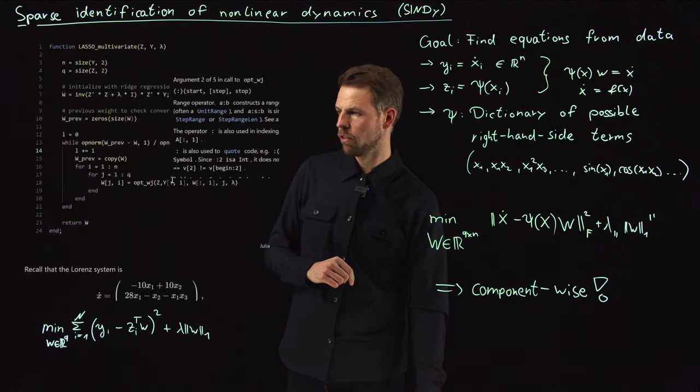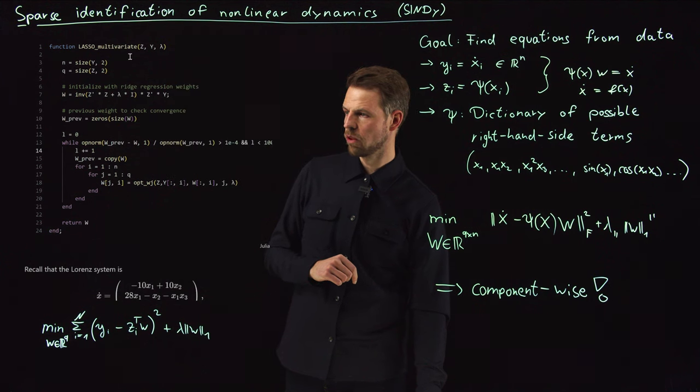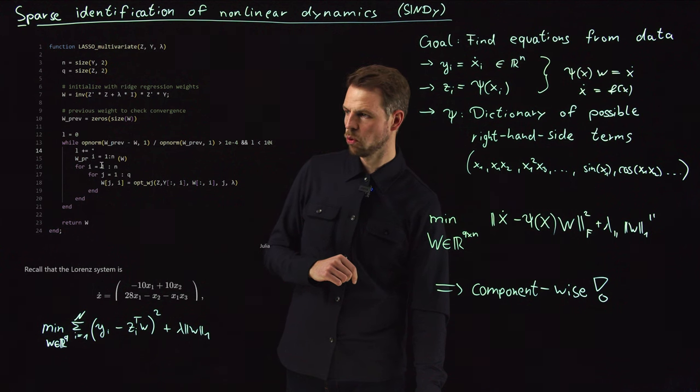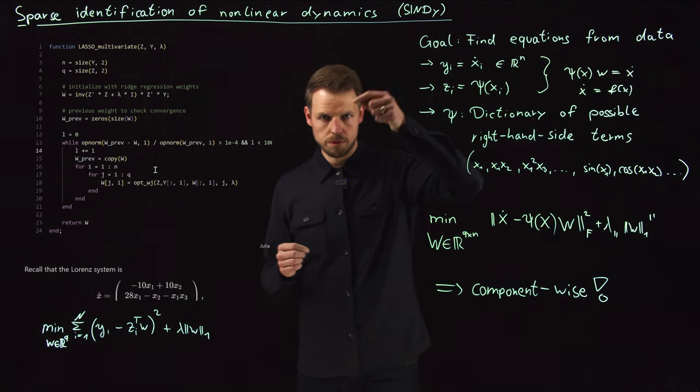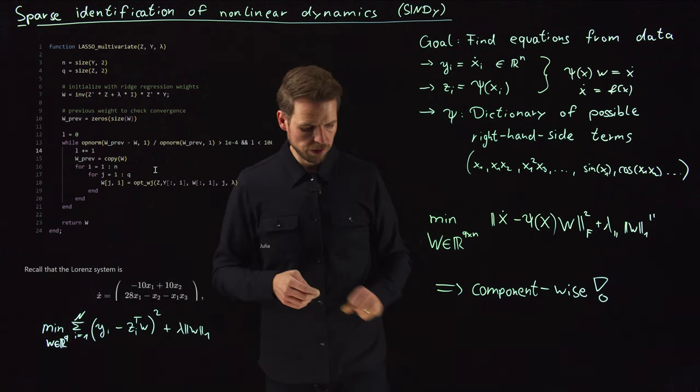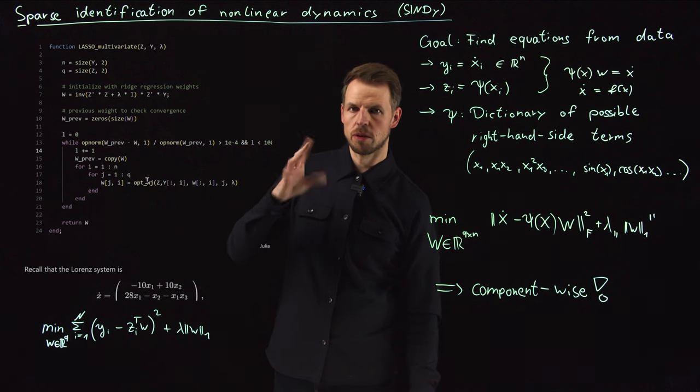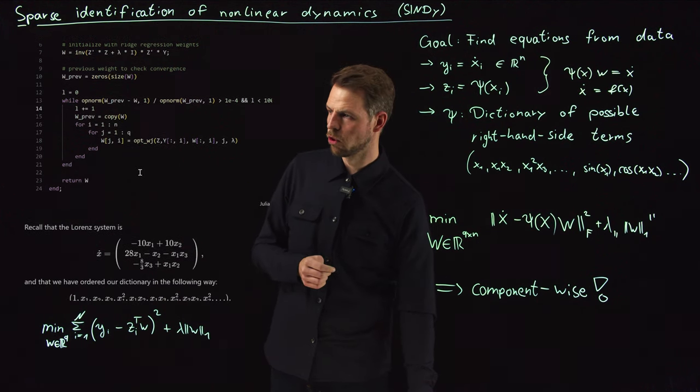What you will find is this multivariate Lasso is nothing else but doing this component-wise. You see two loops, the one goes over the three components, and the inner one goes cyclically through the indices. It's basically three times the Lasso problem wrapped around.